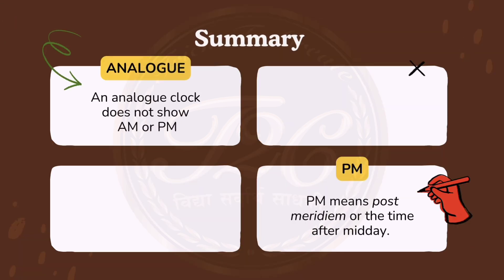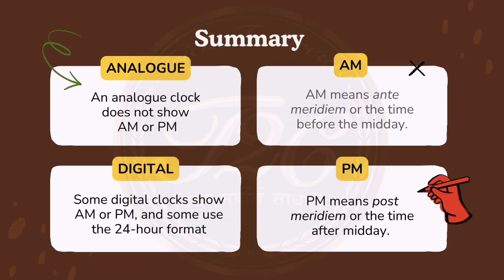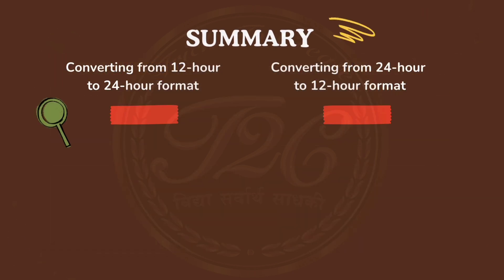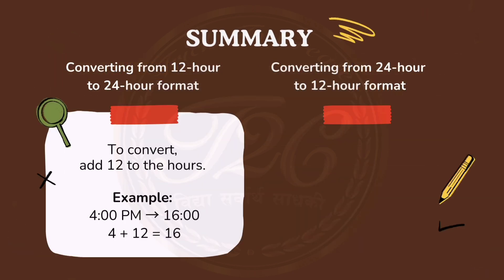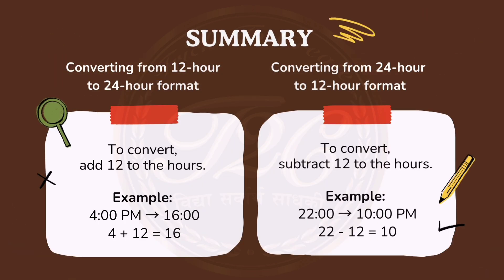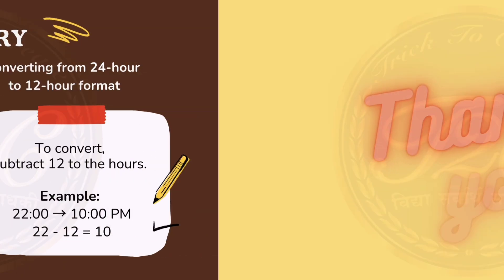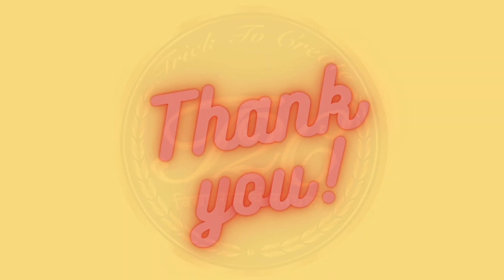Let us have a quick summary. We have learned about types of clocks and a.m. and p.m. Moreover, we have also seen how to convert 12-hour format to 24 and 24 to 12. Hope you understand the video. Keep sharing.